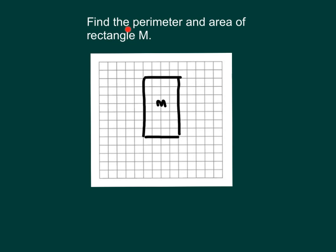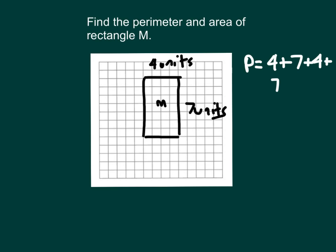Here we're asked to find the perimeter and area of rectangle M. The width is 1, 2, 3, 4 — 4 units. The length is 1, 2, 3, 4, 5, 6, 7 — 7 units. So the perimeter is 4 plus 7 plus another 4 for the bottom, and another 7 for the left-hand side. 4 plus 7 is 11, plus 4 is 15, plus 7 is 22 units.